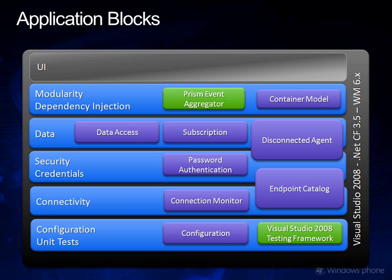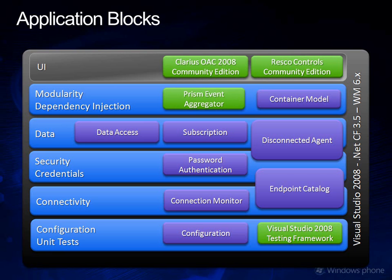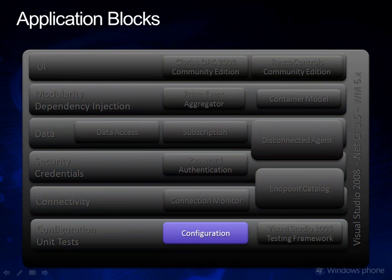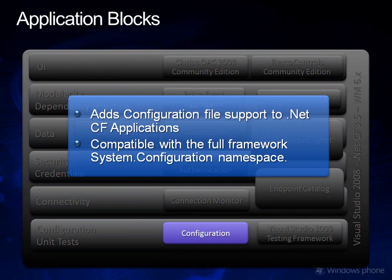You also have third-party community edition products like the Clarius Orientation Aware Control and the Resco Mobile Forms Toolkit. Let's take a quick look at the main blocks, starting with the configuration block. The configuration block fills the lack of configuration file support for the .NET Compact Framework. It adds configuration file support for your Compact Framework application and is compatible with the full framework System.Configuration namespace, though it is read-only and doesn't support application settings.